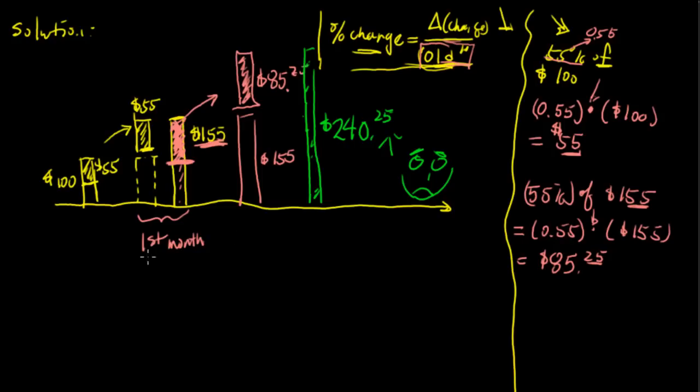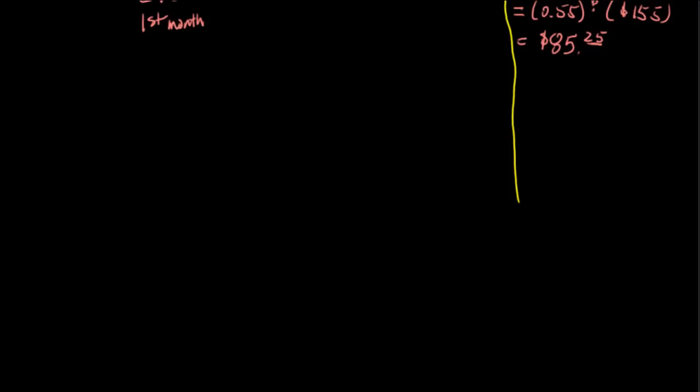Now let's take a look mathematically what's really happening. How do we write this? Now we solved this graphically. We know the answer is $240.25. So let's take a look mathematically how we write this all down. So let me adjust my timer over here. Okay. All right. So mathematically, for the first month, we have ticket price of $100.